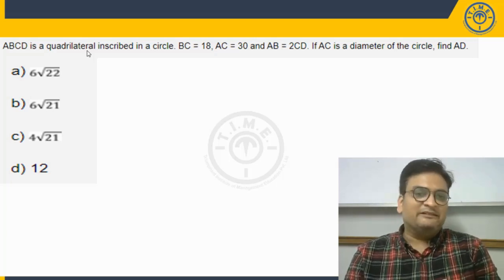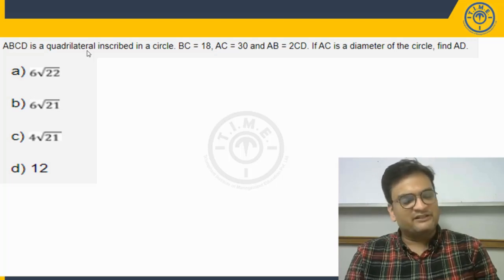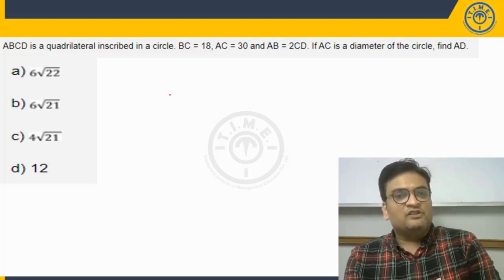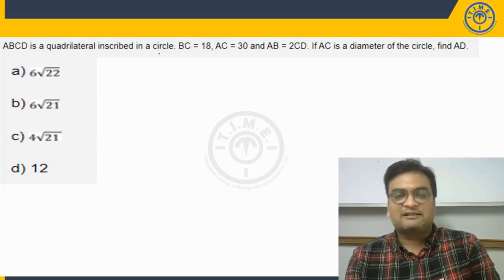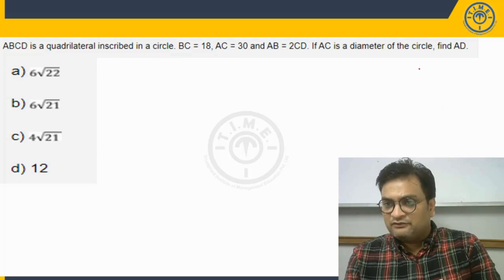I, however, will be continuing the discussion of the question here. So let us get started. The question says, ABCD is a quadrilateral inscribed in a circle. So what would that mean?